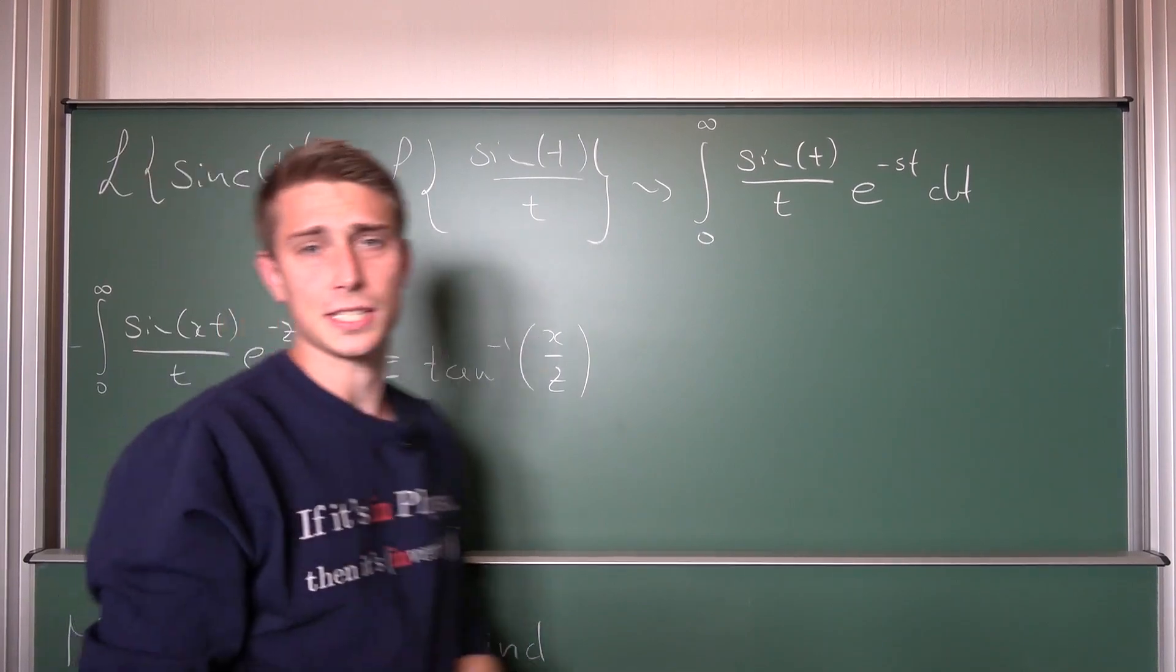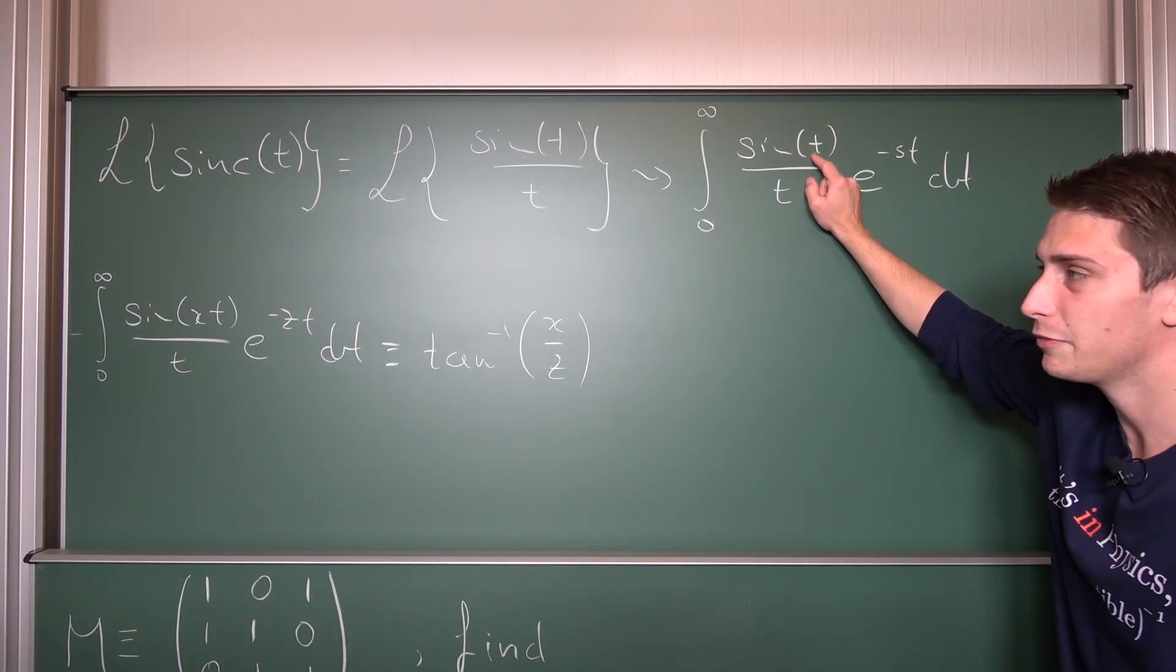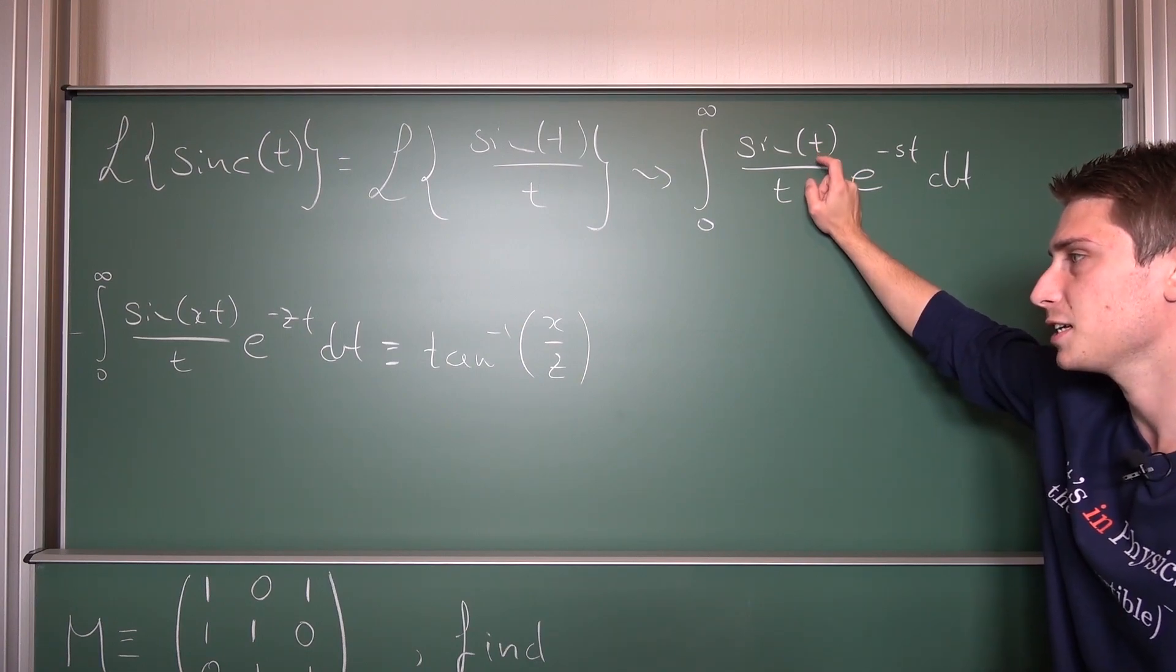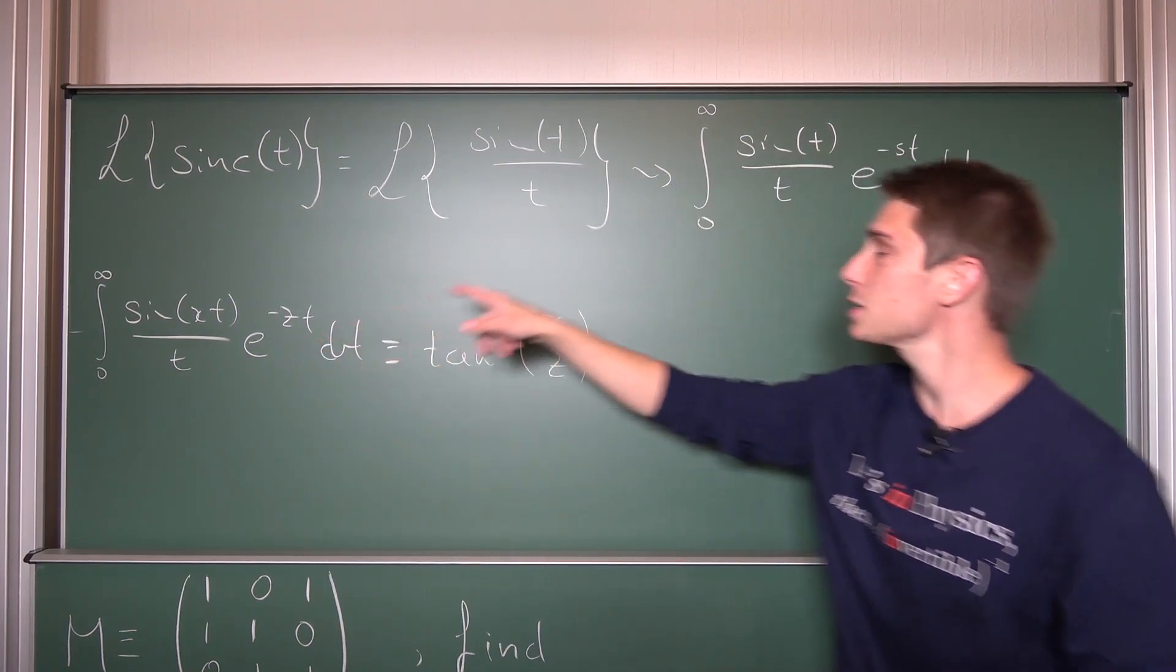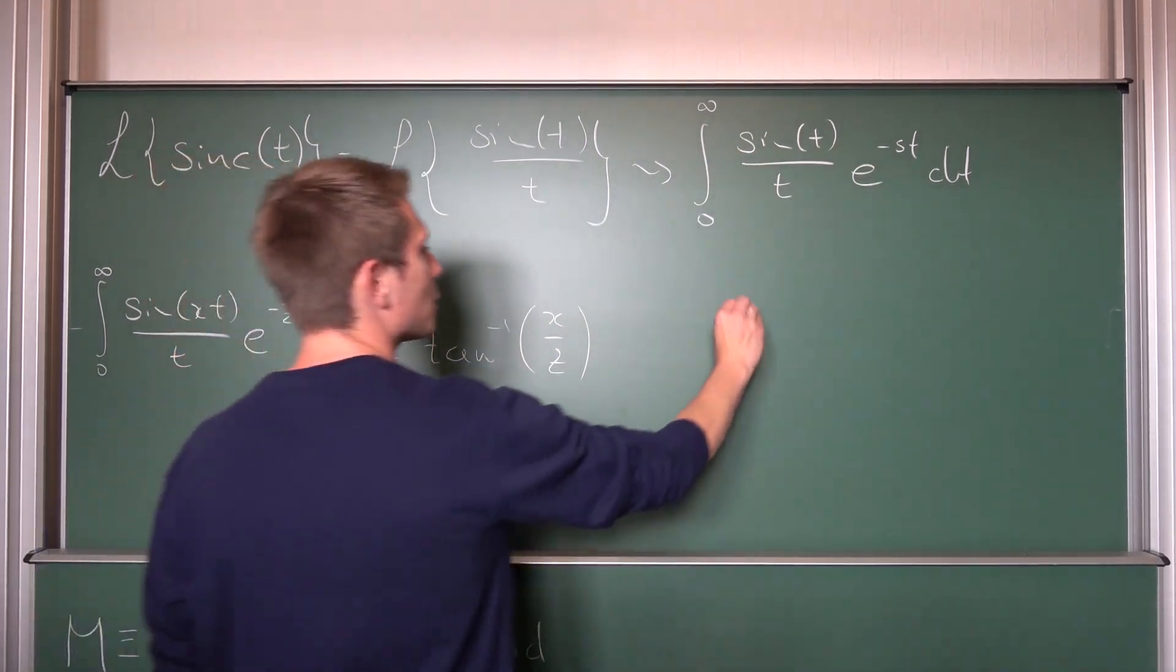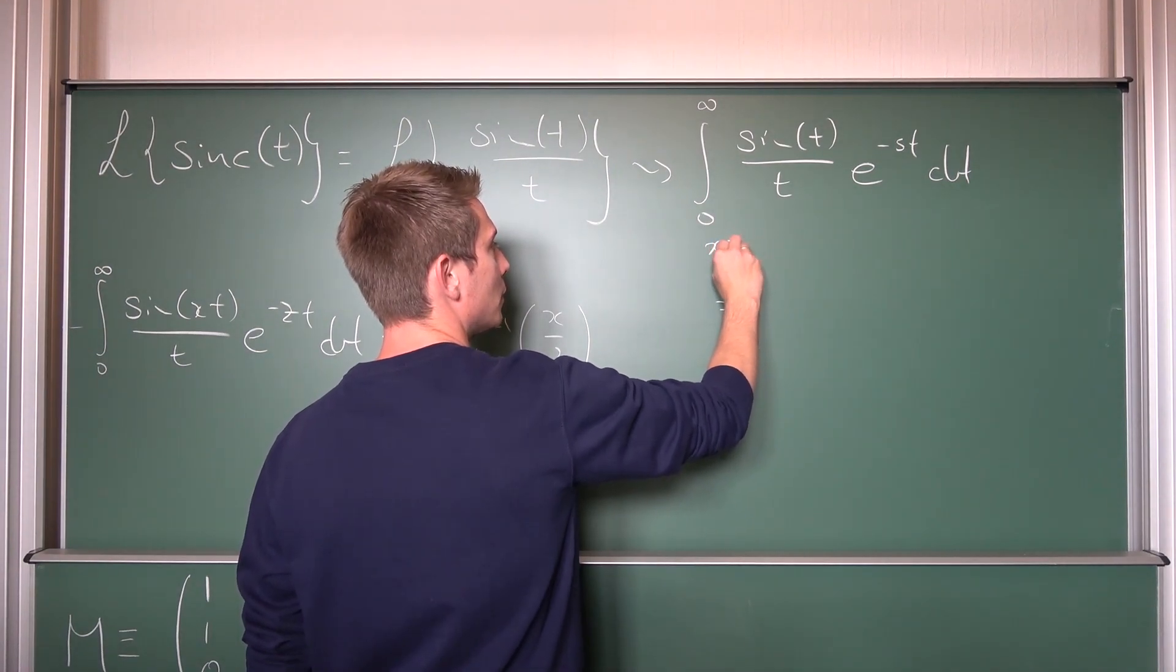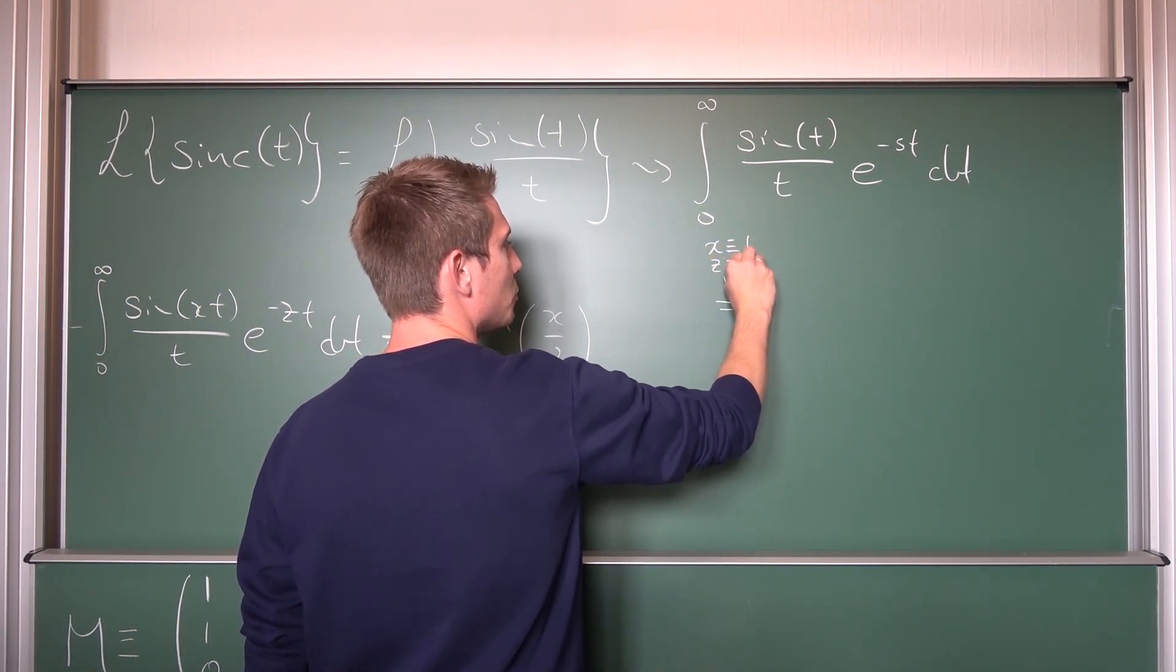Now you might see some similarities here going on. I mean, our x up here is nothing but 1 because 1 times t is nothing but t, and our z is called s up here. Meaning what we are going to do, we are going to say that for x being equal to 1 and z being equal to s,